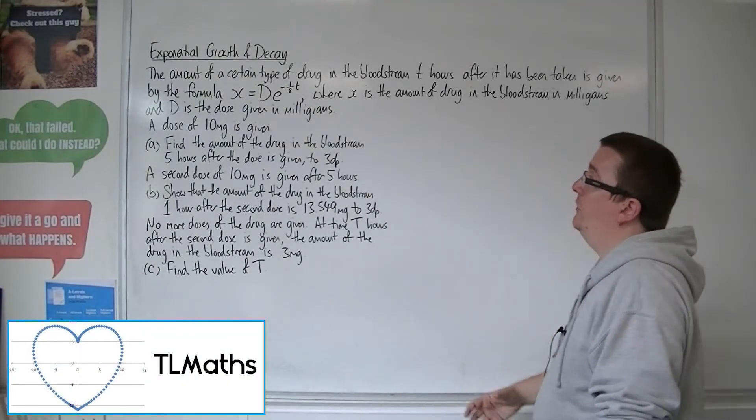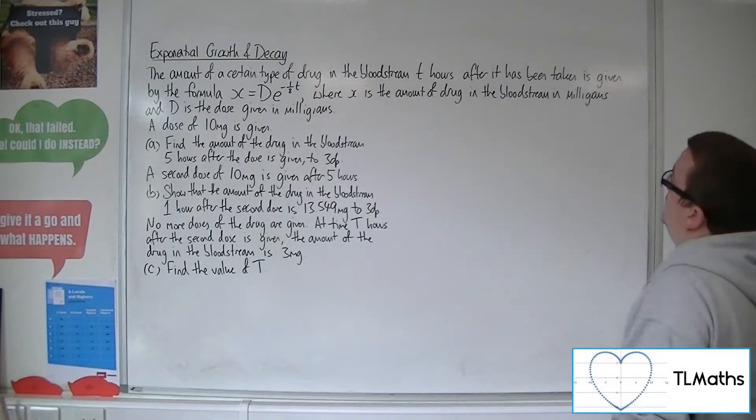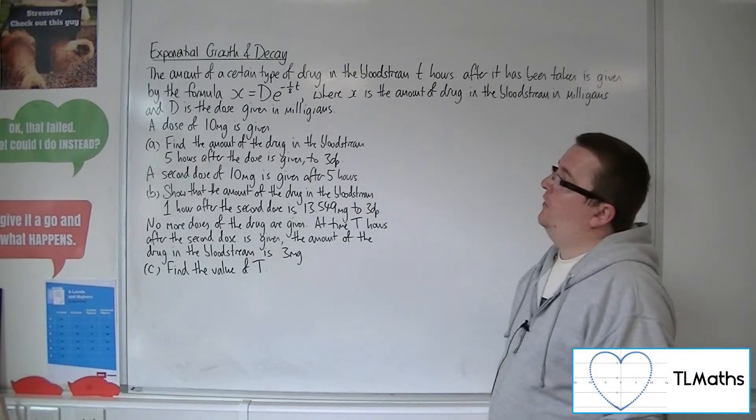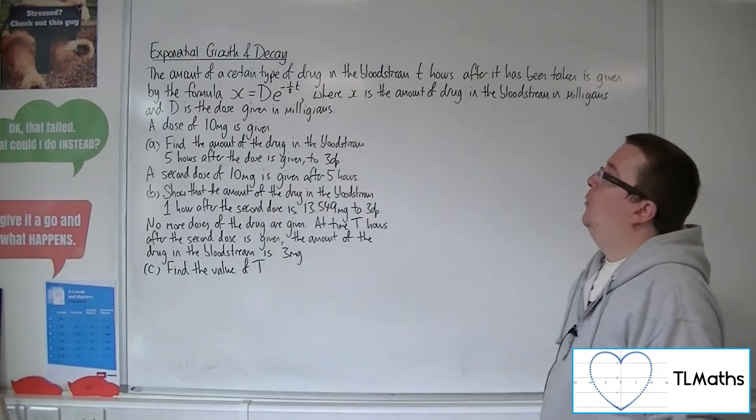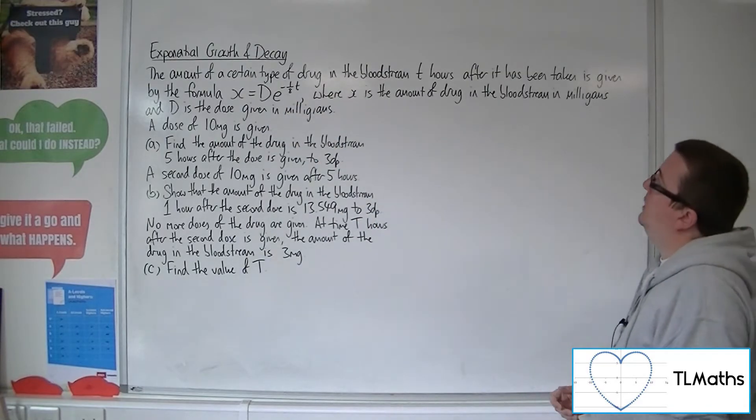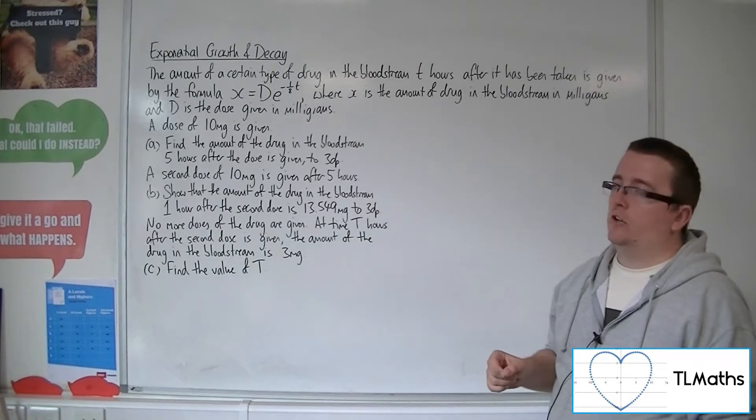Okay, so the amount of a certain type of drug in the bloodstream, t hours after it has been taken, is given by the formula x equals d times e to the minus one-eighth t, where x is the amount of drug in the bloodstream in milligrams, and d is the dose given in milligrams.